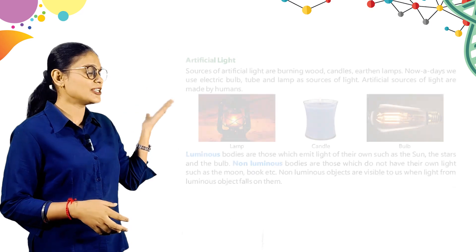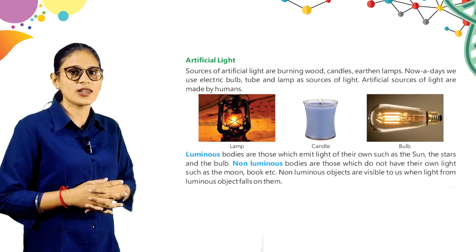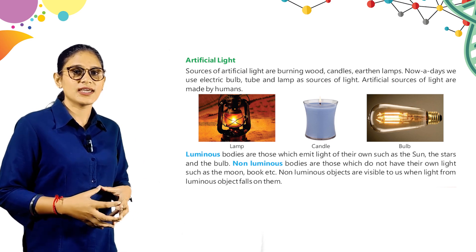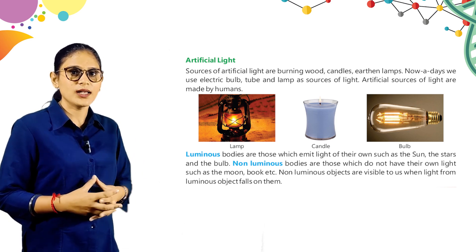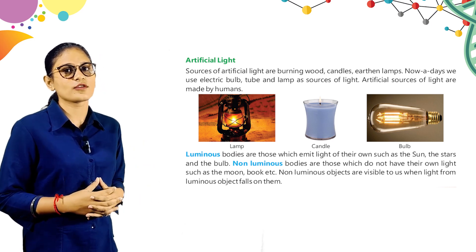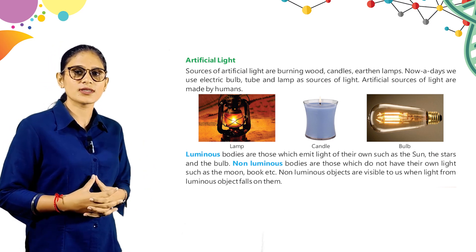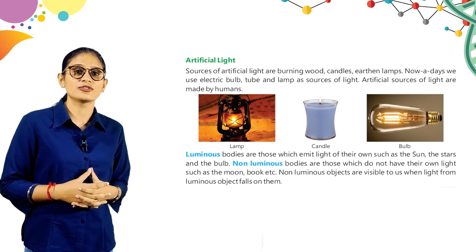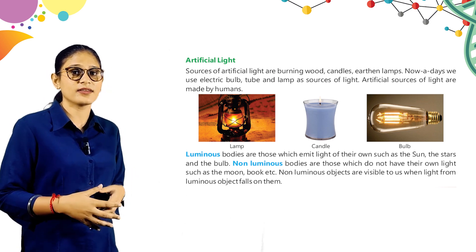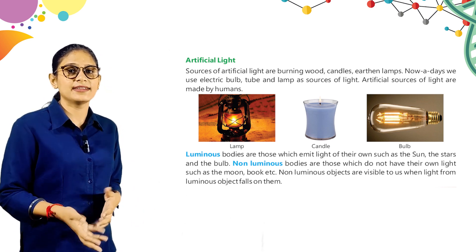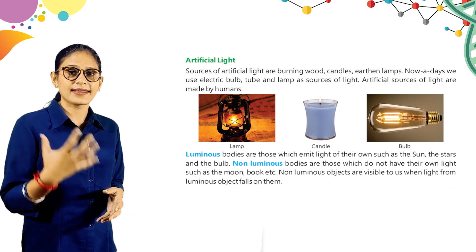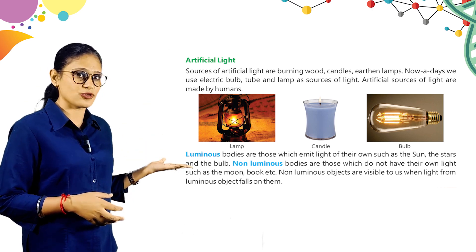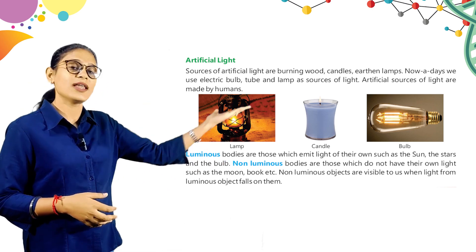Here is artificial light. Sources of artificial light are burning wood, candles, earthen lamps. Nowadays we use electric bulbs, tubes, and lamps as sources of light. Artificial sources of light are made by humans. Burning of wood, candles, bulbs — all are examples of artificial sources of light. Look at these pictures: lamp, candle, and bulb.